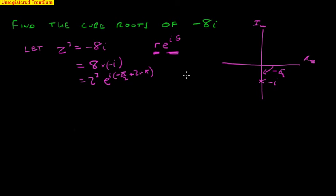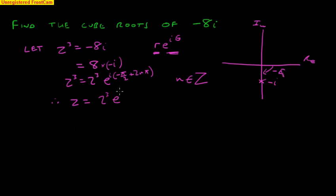So it can be that one or any of the multiples as you go round, where n is a member of all the integers: negative 1, negative 2, negative 3, and so on, and 0, 1, 2, 3, 4. In other words, n is a member of ℤ — the integers, positive, negative, and 0. We've got z cubed equal to that. We can now take the cube root of both sides. So therefore z equals that, 2³ · e^(i·(−π + 4nπ)/2) all to the power of one third, because I've just taken the cube root of both sides.